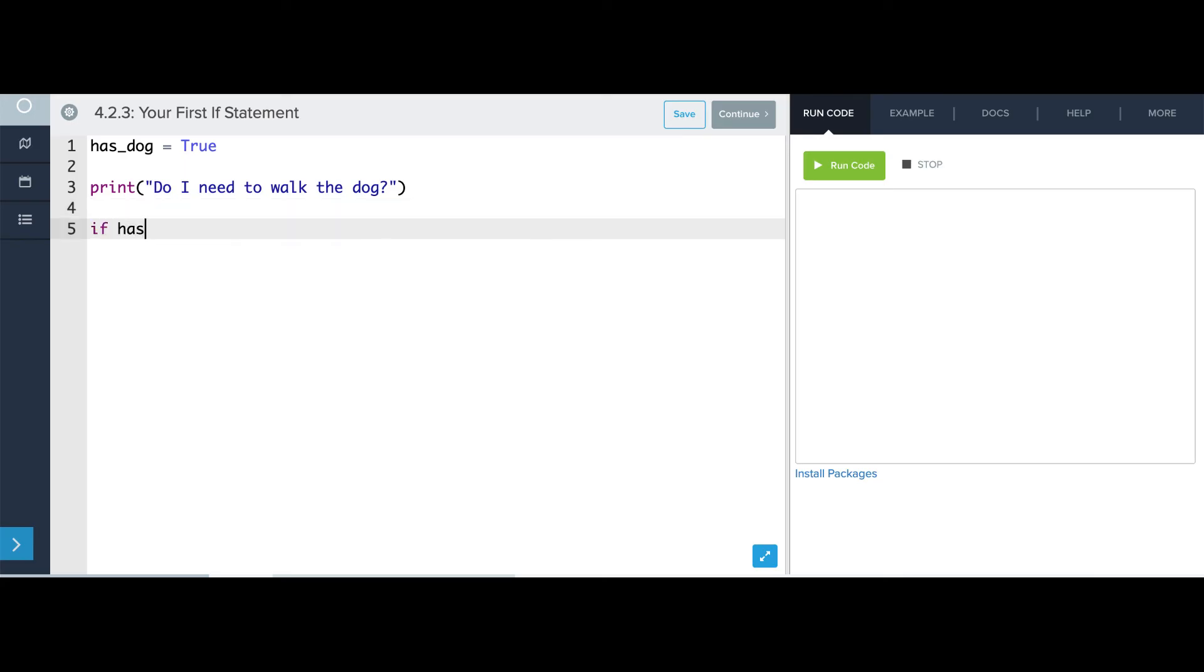So I'm going to say if has_dog, and if it is the case that I have a dog, I'm going to print yep, I do have to walk the dog. So if I run this, it's going to print do I need to walk the dog, and it's going to print that no matter what. Then on line 5 it's going to check the value of has_dog, and since it is true, the print statement on line 6 is going to execute, and it's going to say yep.